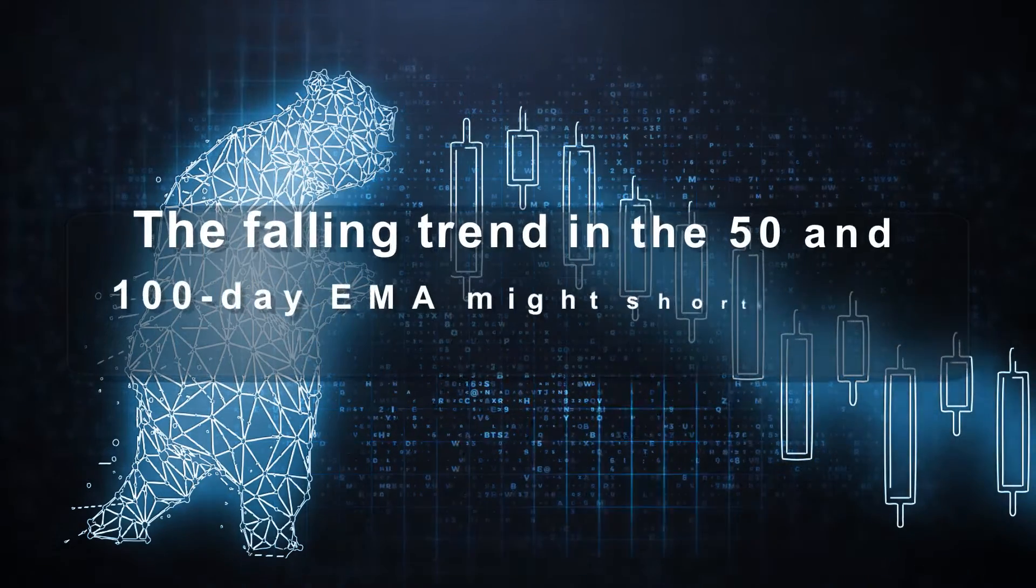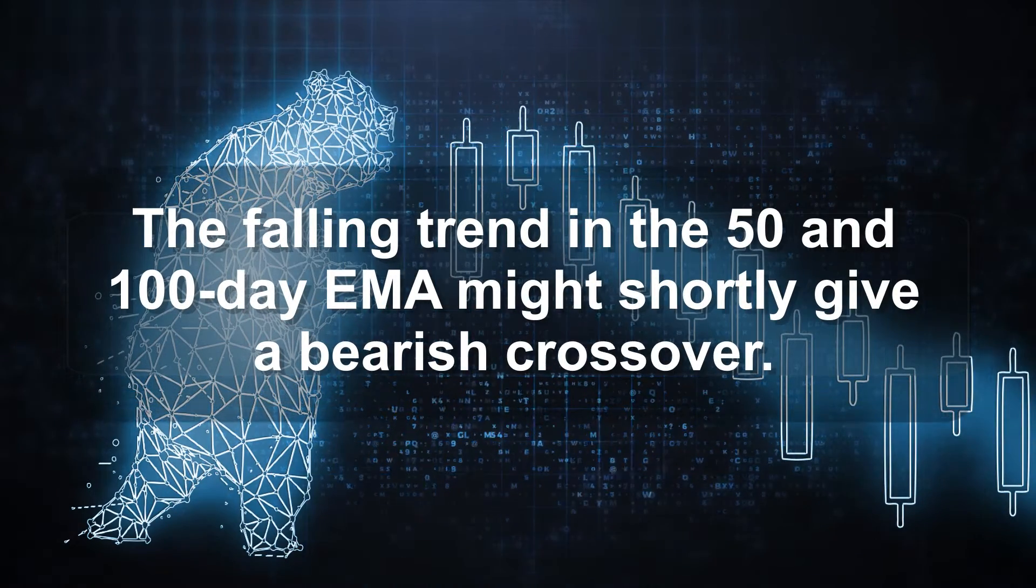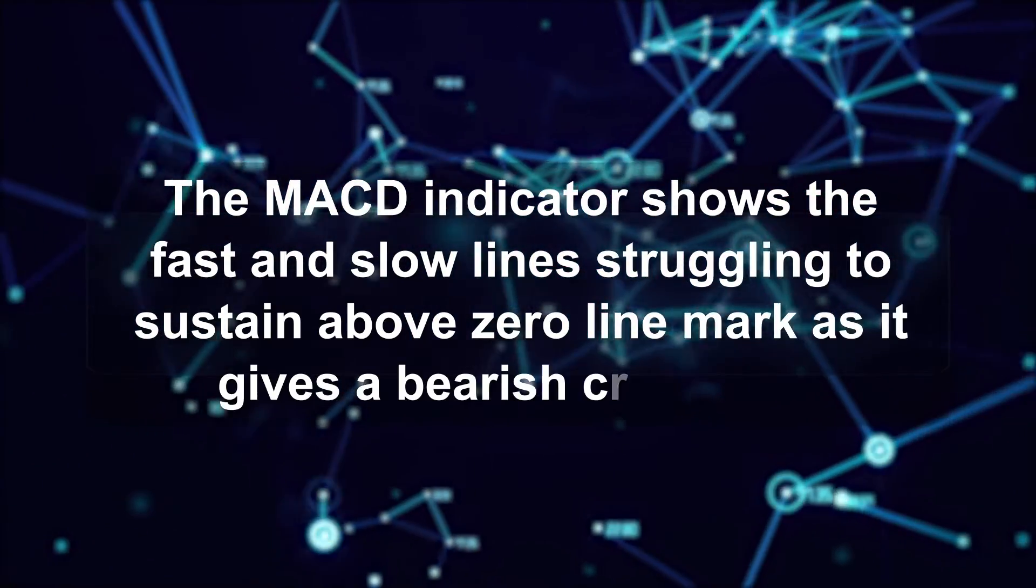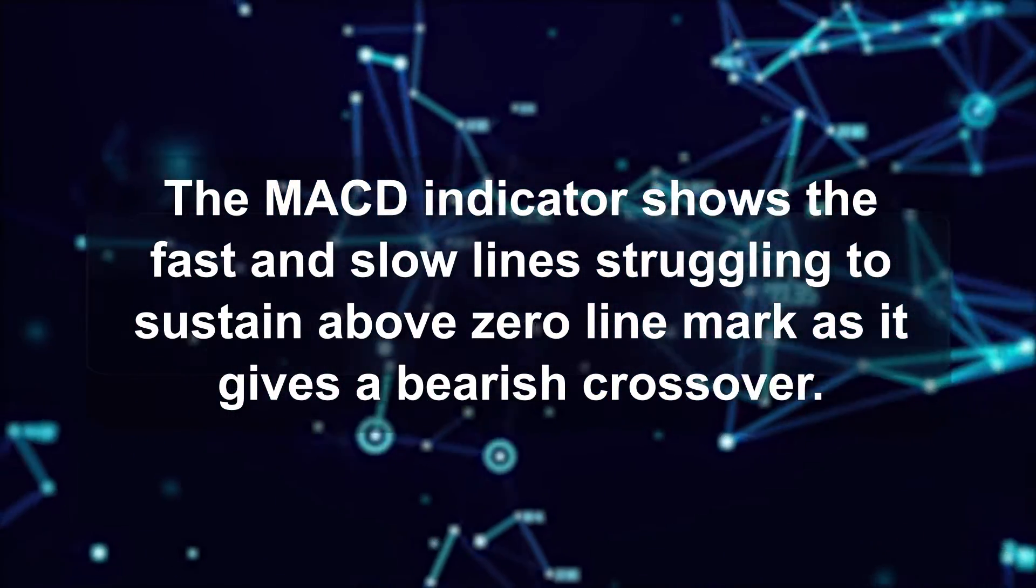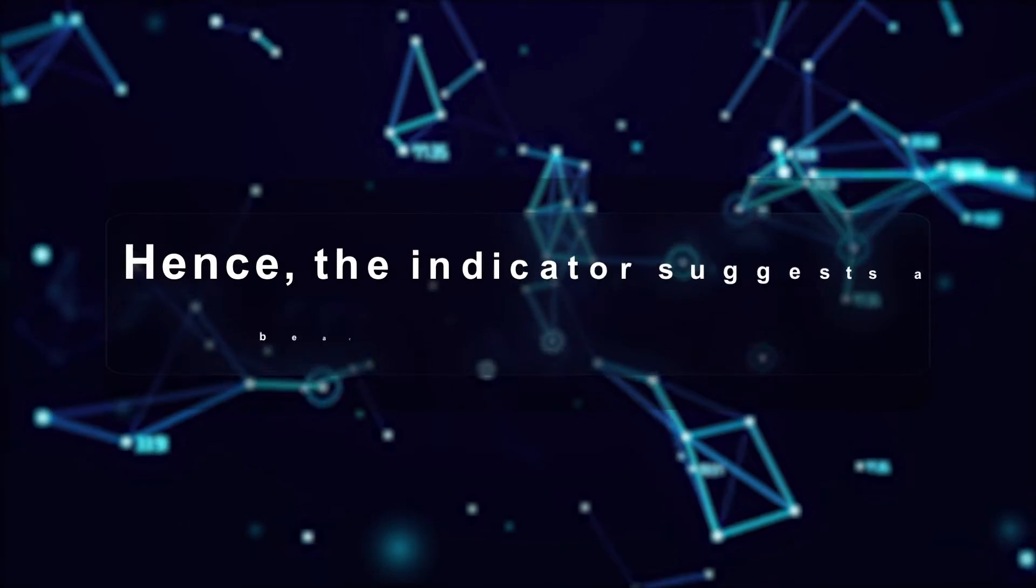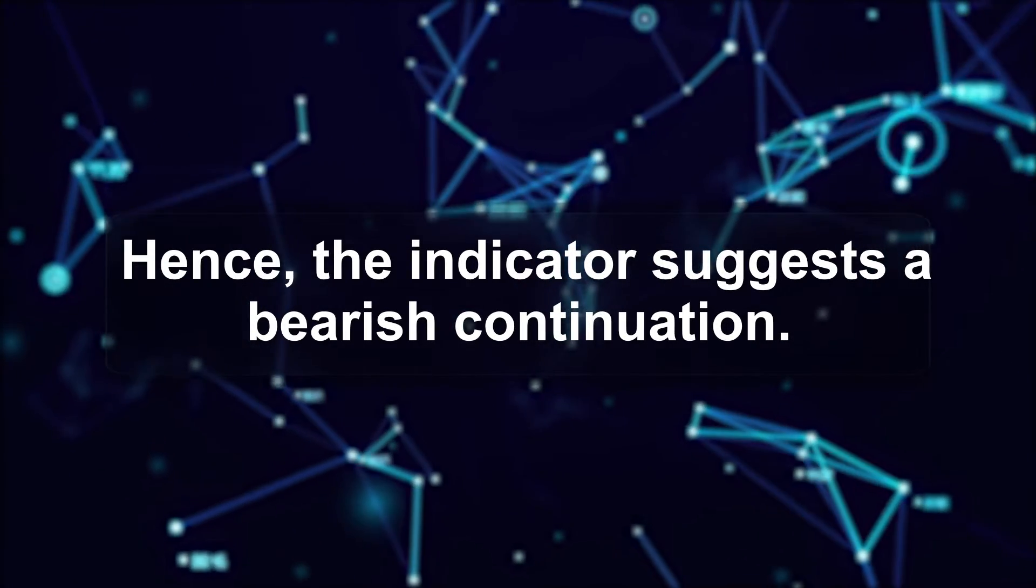Moreover, the falling trend in the 50- and 100-day EMA might shortly give a bearish crossover. The MACD indicator shows the fast and slow line struggling to sustain above zero line mark as it gives a bearish crossover. Hence, the indicator suggests a bearish continuation.